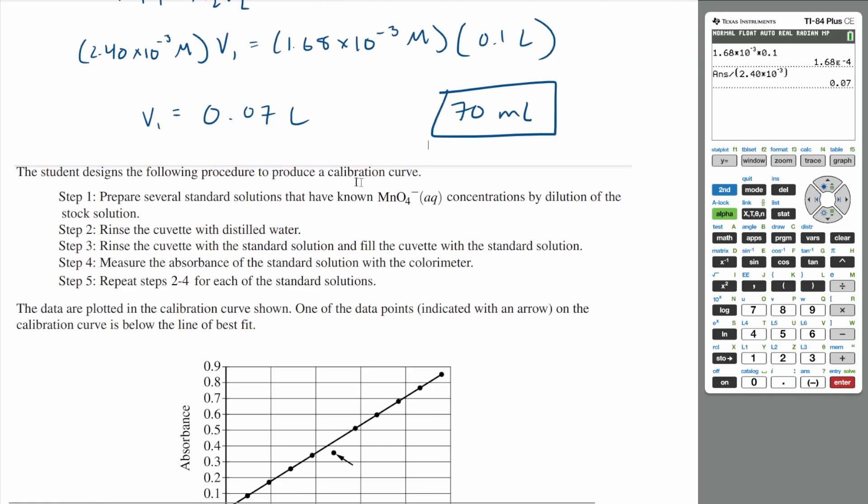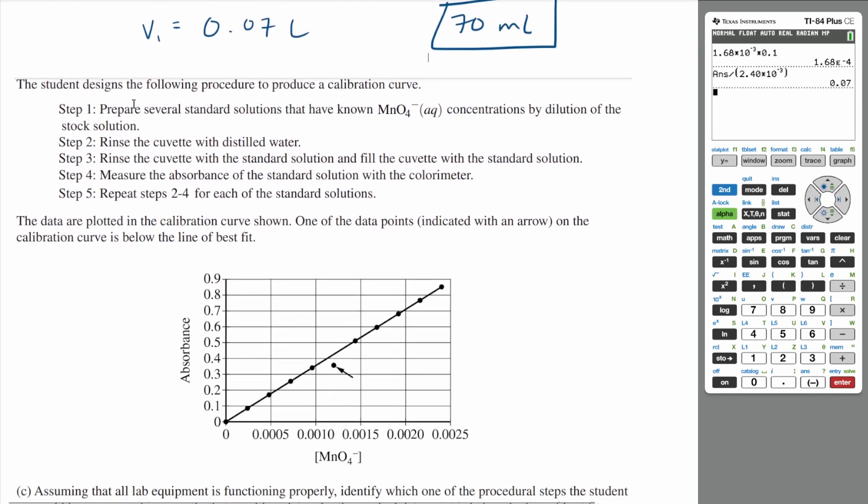The student designs the following procedure to produce a calibration curve. Step one: prepare several standard solutions that have known permanganate concentrations by dilution of the stock solution. Step two: rinse the cuvette with distilled water.